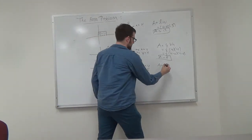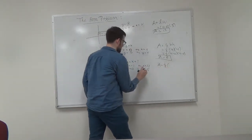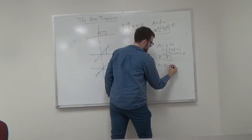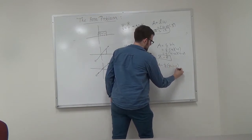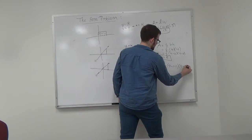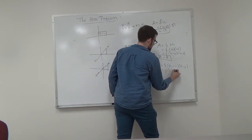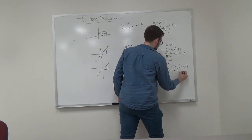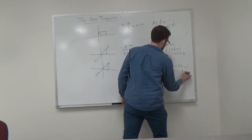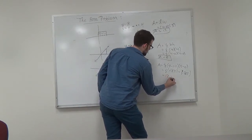Area is equal to 1 half times base, which is 4 minus negative 1 times height, which is 5 minus 0. So, 1 half times 5 times 5 is 1 half of 25 is equal to 12.5.